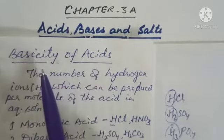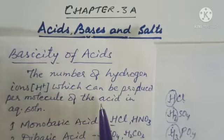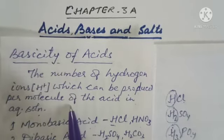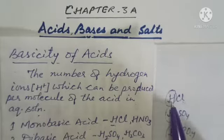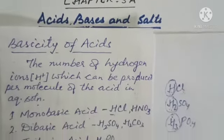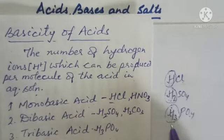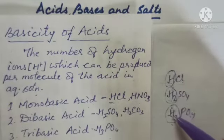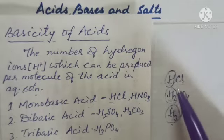What do we mean by basicity of acids? It is the number of hydrogen ions which can be produced per molecule of the acid in aqueous solution. For example, one molecule of hydrochloric acid produces one hydrogen ion, sulfuric acid produces two hydrogen ions, while phosphoric acid produces three hydrogen ions per molecule in aqueous solution.